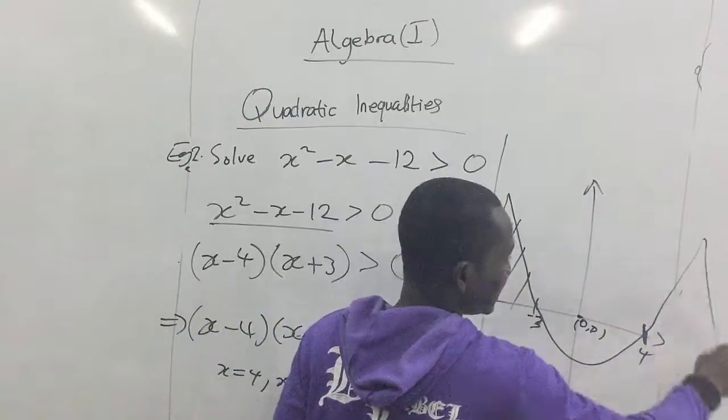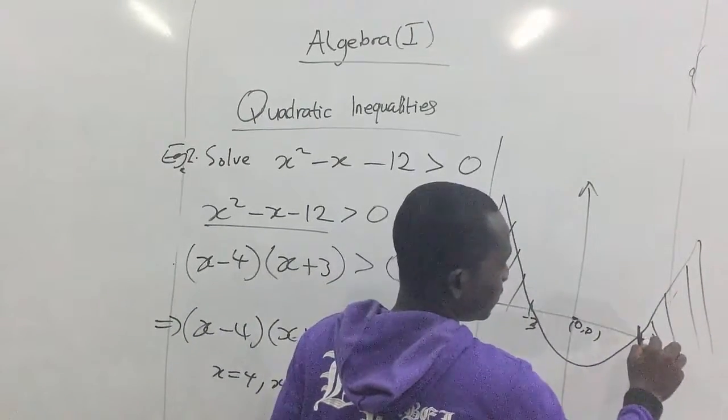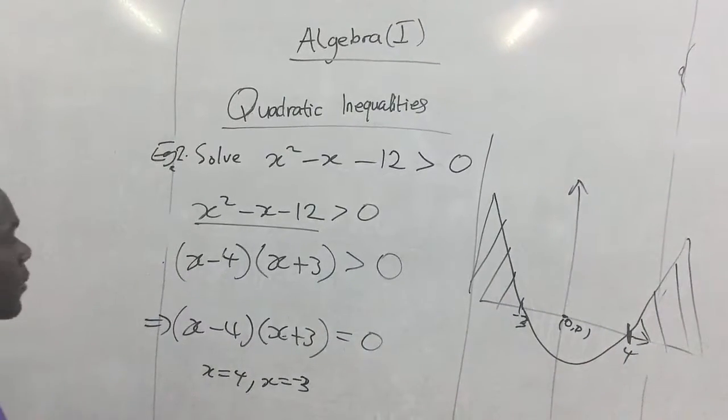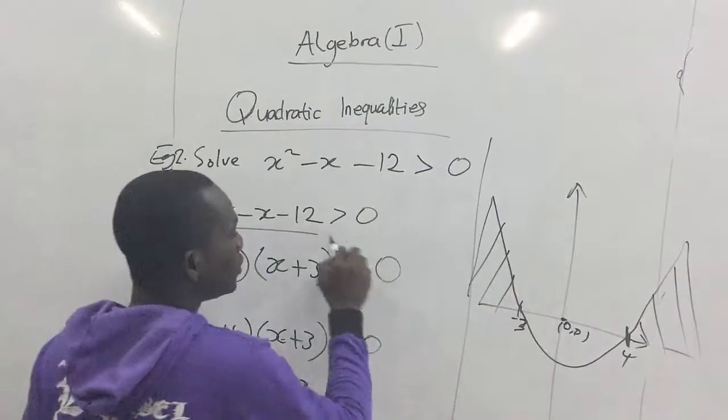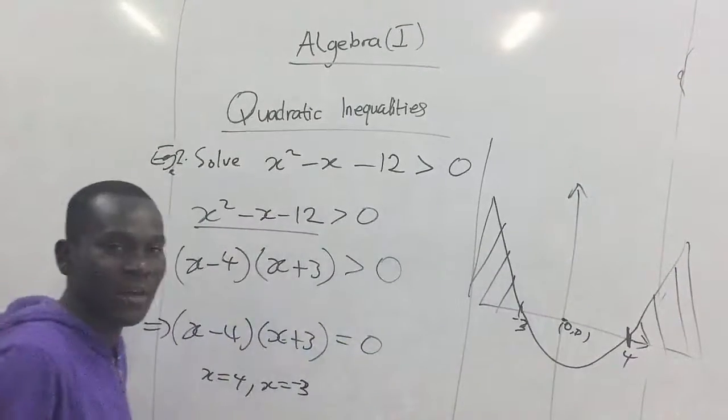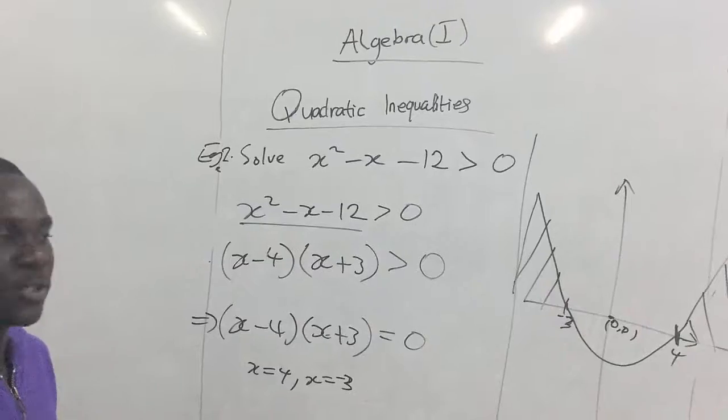So if this side is not satisfied, the other regions do satisfy the inequality expressions. Now we can also see that this is greater than. It has no bar attached to negative three, so negative three and four itself are not part of the solution set.